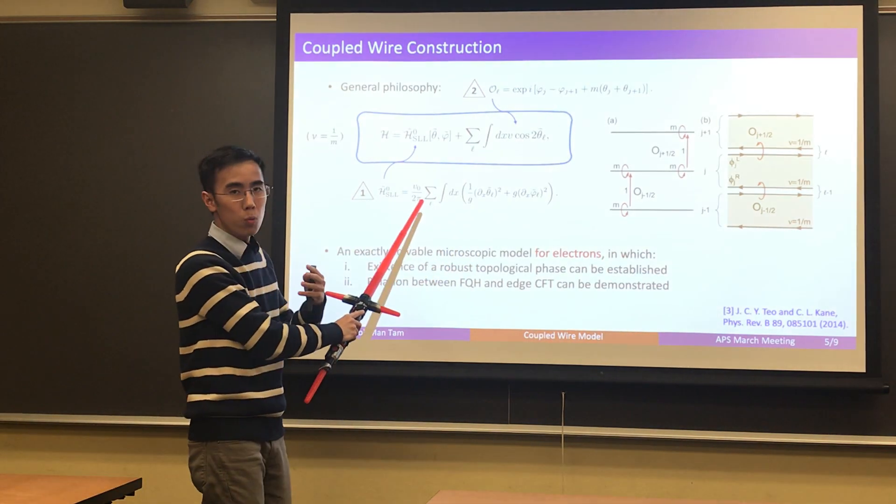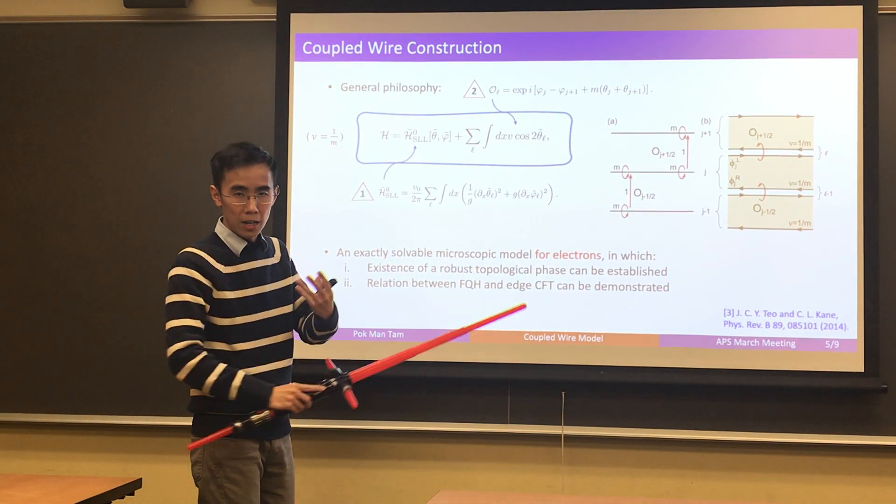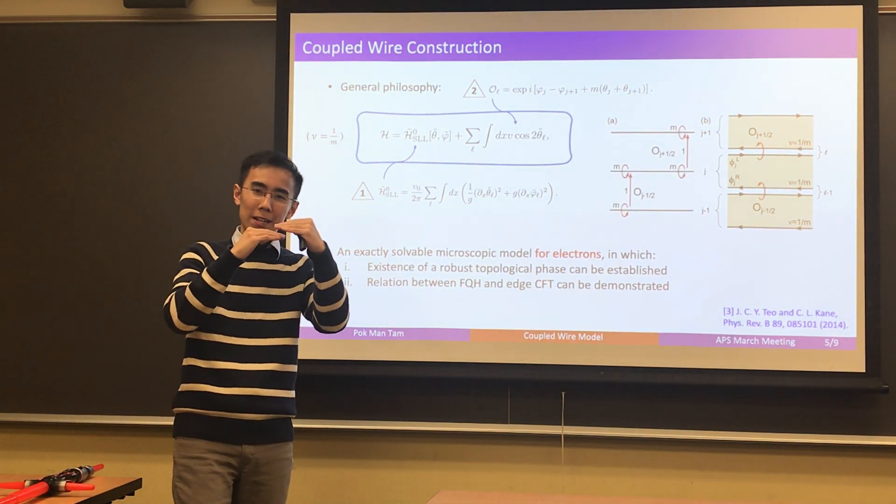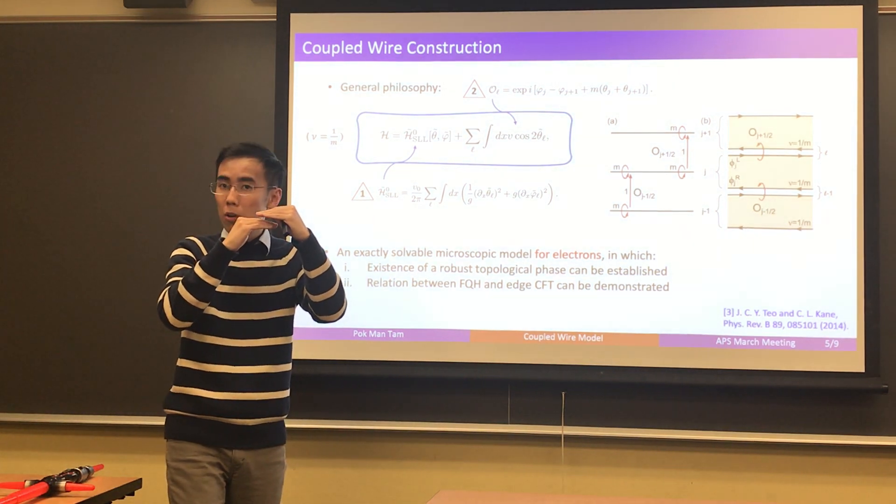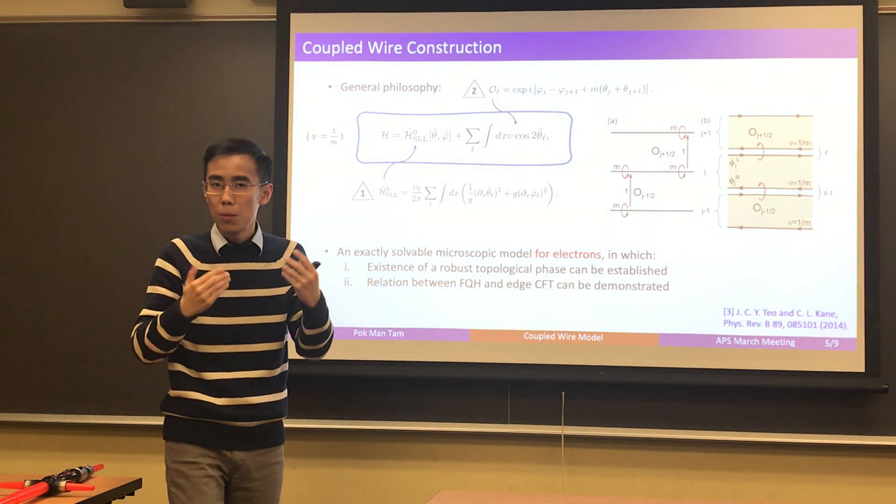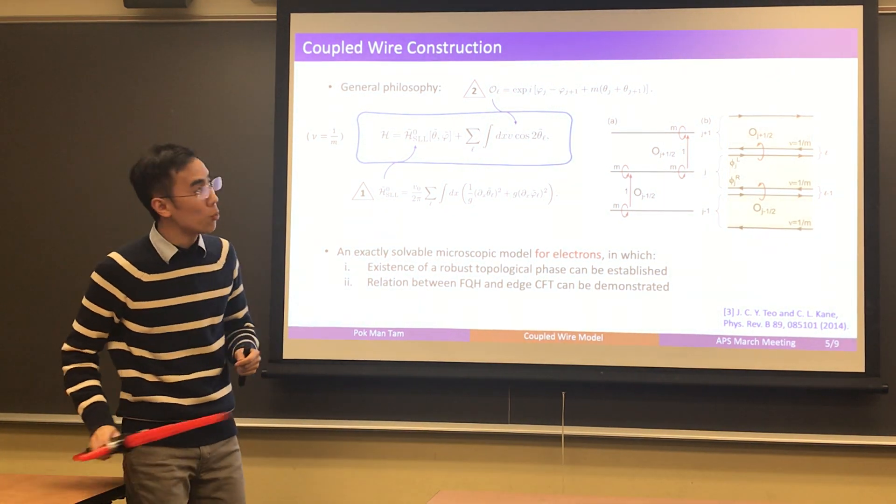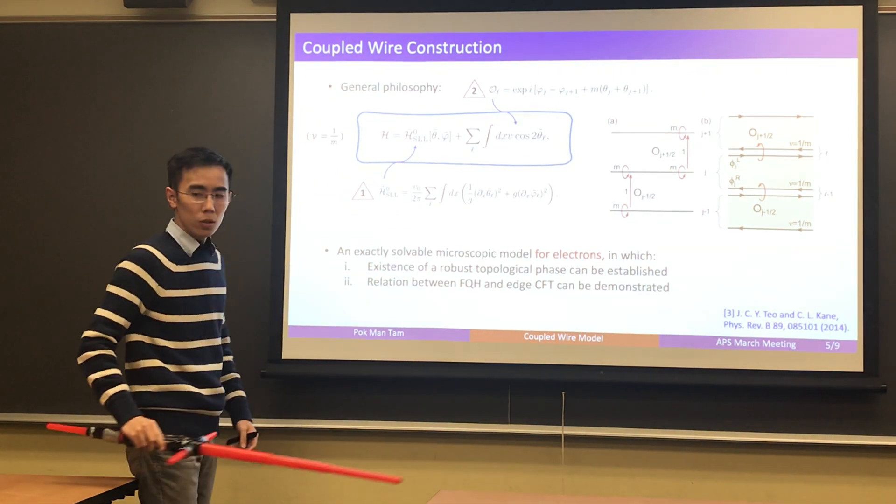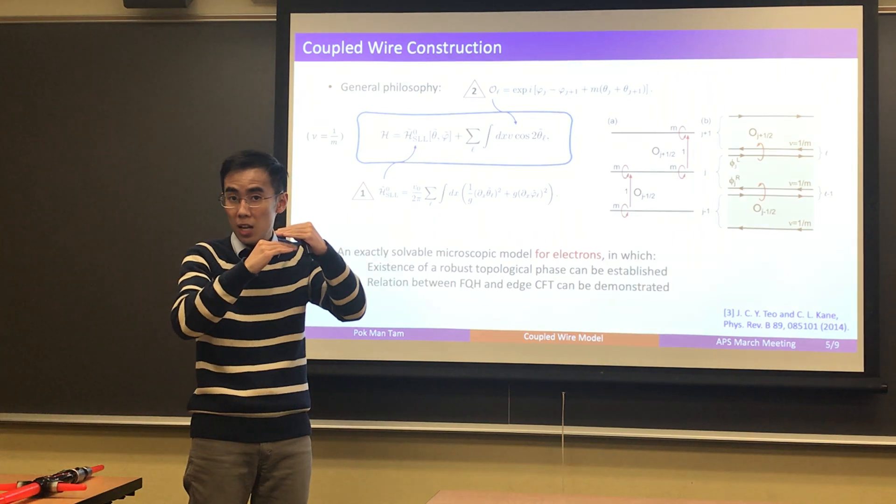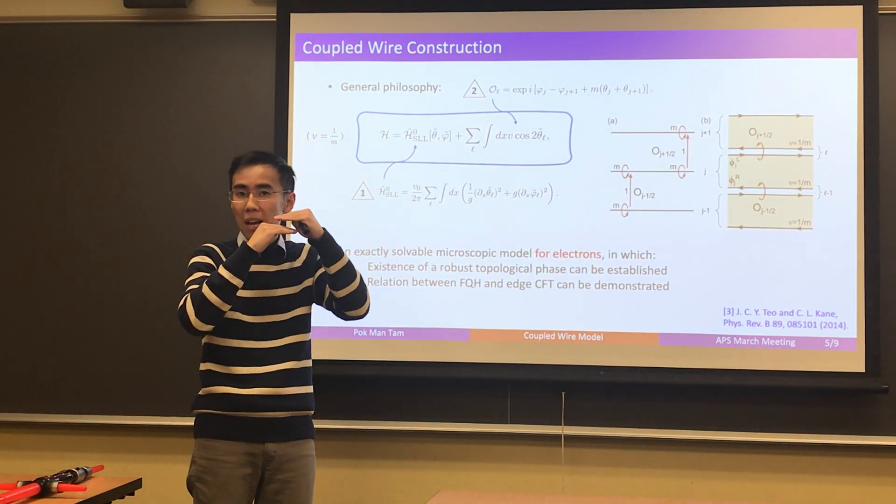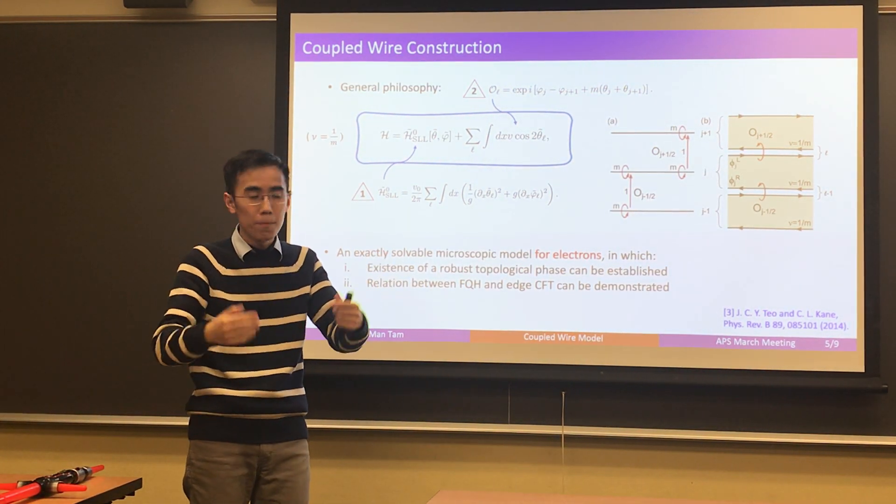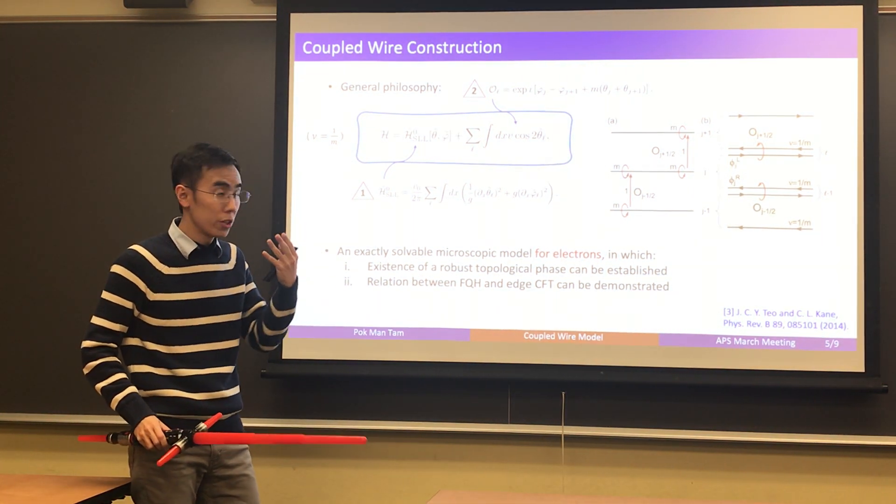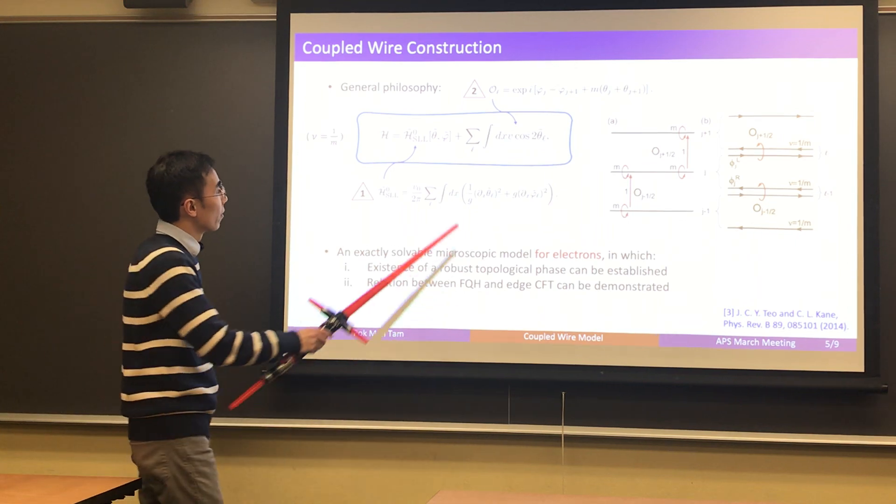There are two important ingredients here. The first one, which is the first term here in the Hamiltonian, describes some intrawire forward scattering of electrons that would decouple two chiral modes, such that each of the chiral modes would be described by the correct conformal field theory. What I mean is that, if you want to construct Laughlin states at this filling, 1 over M, you would want the chiral modes to be decoupled and be described by the U(1) level M circle CFT. So, that is the first ingredient, and you have to turn on some intrawire forward scattering in order to do that.